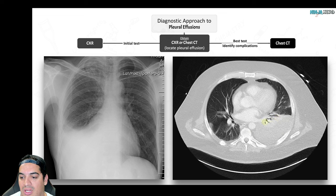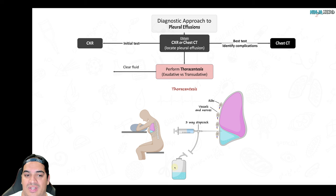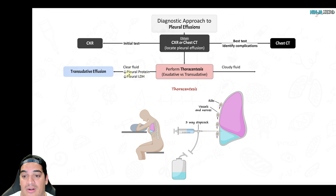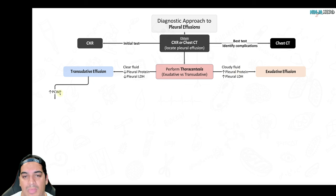On thoracentesis, analyze the fluid for color, pleural protein, and pleural LDH. Clear fluid with low protein and low LDH suggests transudative — likely elevated pulmonary capillary wedge pressure (CHF) or low oncotic pressure (cirrhosis, nephrotic syndrome). Cloudy fluid with high protein and high LDH suggests exudative — indicating lung injury. Use Light's criteria: pleural-to-serum protein ratio >0.5, pleural-to-serum LDH ratio >0.6, or pleural LDH greater than two-thirds the upper limit of normal serum LDH all indicate an exudative effusion.